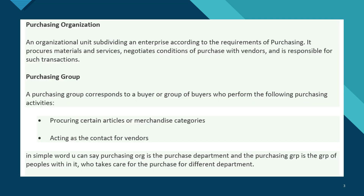What is the difference between a purchasing organization and a purchasing group? A purchasing organization is an org unit which procures materials and services. It negotiates conditions and prices with vendors and is responsible for the overall purchasing activity of the company code or the plant. A purchasing group is a set of buyers who perform the purchasing activities.